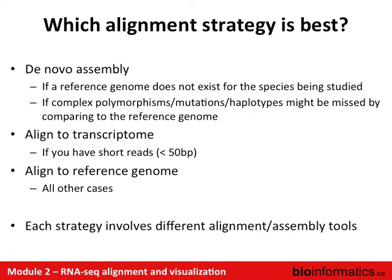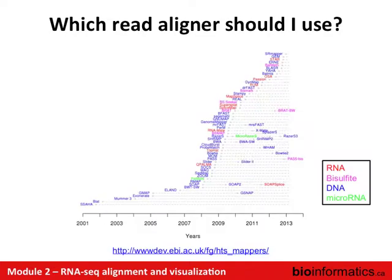Each of these involves different alignment or assembly tools. Here's a figure showing when all the different short-read aligners came into use — maybe 40 or 50 different aligners broken down by application. The ones in red are for RNA-seq specifically. You've also got methylation bisulfite sequencing, DNA whole-genome exome-type sequencing, and small RNA approaches with algorithms designed specifically for those.